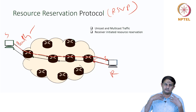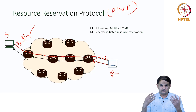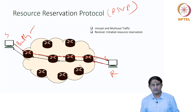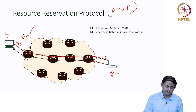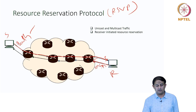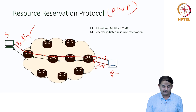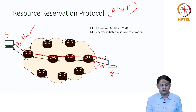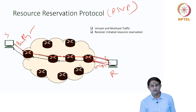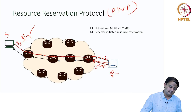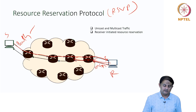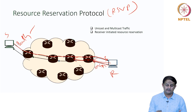The reservation message specifies the parameters required — bandwidth, throughput — in a hop-by-hop fashion. For example, the receiver tells a router it wants 1 Mbps bandwidth as its QoS requirement. That router independently decides whether it can provide 1 Mbps to the receiver — it says yes or no. If it says yes, it confirms it can provide 1 Mbps bandwidth, then transmits a reserve message to the upstream router asking for 1 Mbps as well.